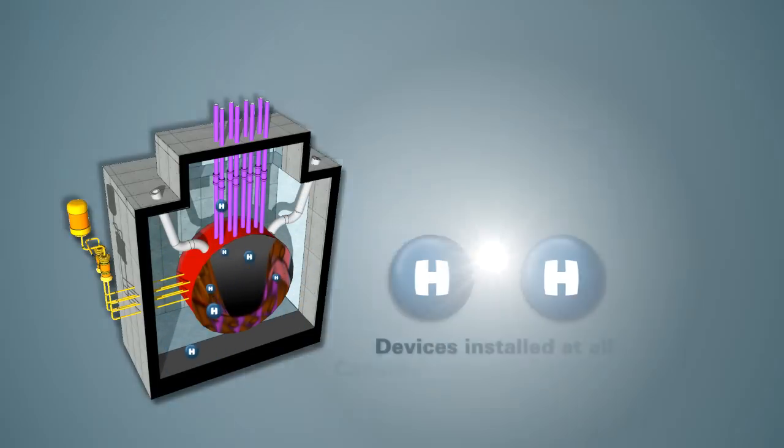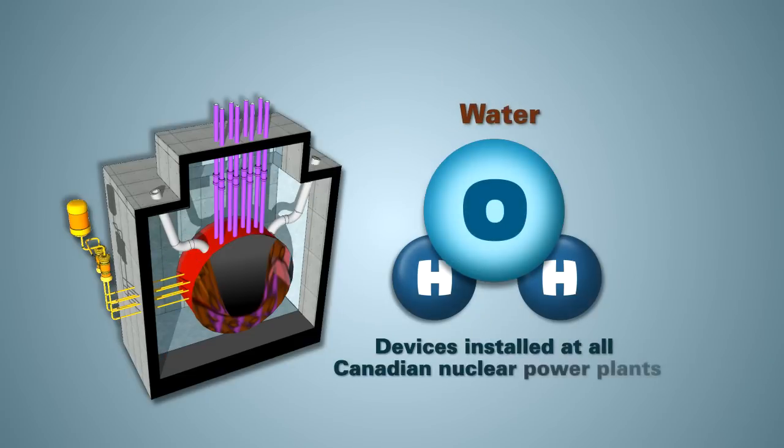In Canada, special devices that convert the hydrogen to water have been installed at nuclear power plants to reduce the risk of explosion. These devices also work without power.